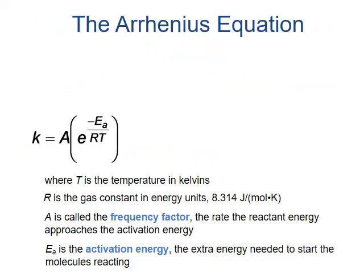The Arrhenius equation relates the rate constant k to temperature through an exponential relationship. In this equation, A is a reaction-specific constant known as the frequency factor. It's multiplied by the mathematical constant e, which is raised to the negative of the activation energy for the reaction, divided by the ideal gas constant and by temperature in Kelvin.